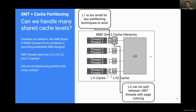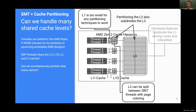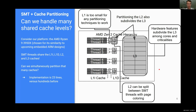We can partition the L2 using page coloring, though this has a side effect of also subdividing the L3, meaning we don't use page coloring for any additional subdividing of the L3. Instead, we use hardware features similar to way partitioning to subdivide the L3 among cores and criticalities. I'd also like to mention that our implementation of this cache coloring scheme is much better than any prior we're aware of — we implemented it at a point in Linux initialization such that our implementation is only 23 lines, which is more efficient and comprehensive than any other prior page coloring work we've encountered.